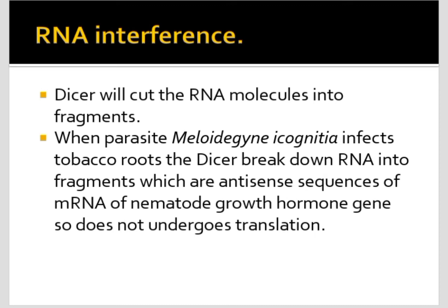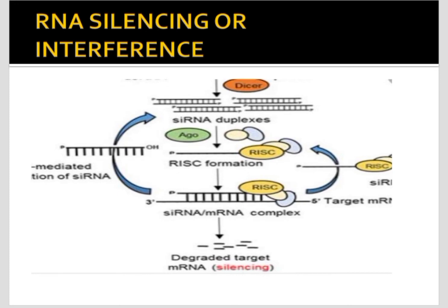RNA interference or silencing is used against nematodes — pests which damage tobacco plant roots. Genes of the parasite are inserted into a plasmid and later into the host tobacco plant, which undergoes protein synthesis and produces an enzyme called Dicer or ribonuclease. Dicer cuts RNA molecules into fragments. When the nematode Meloidogyne incognita infects tobacco roots, Dicer breaks down the RNA into fragments which are antisense sequences of the mRNA of the nematode growth hormone gene. These bind with the nematode mRNA and form double-stranded RNA, which does not undergo translation, effectively silencing or interfering with nematode gene expression.